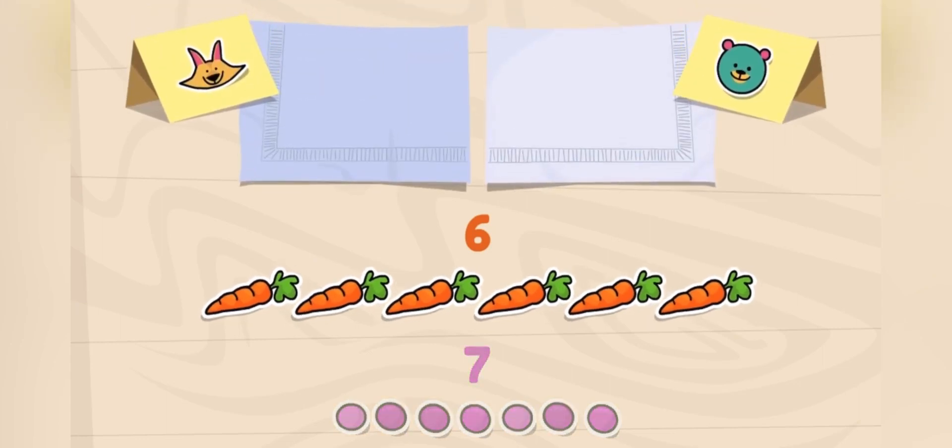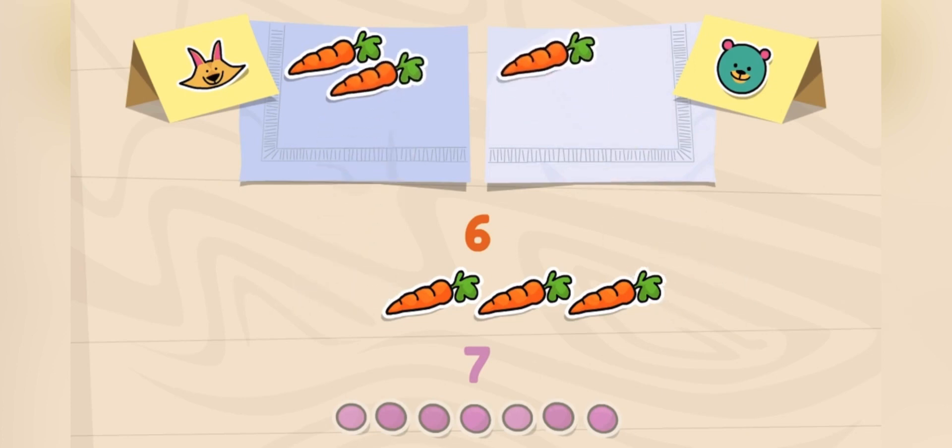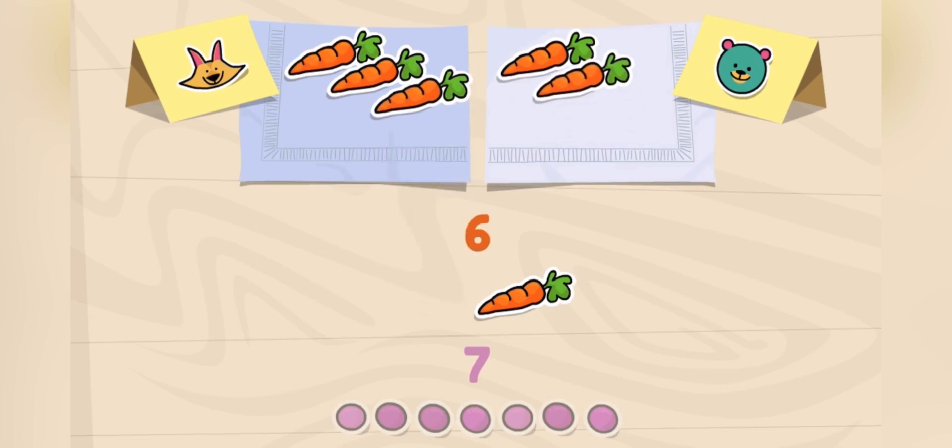Carrots first. Let's see if the number six is even or odd. One to Sandy, one to Cody, one to Sandy, one to Cody, one to Sandy, and the last one to Cody.